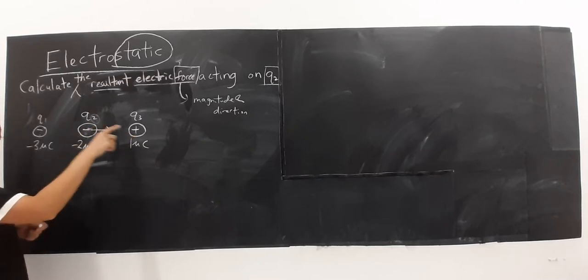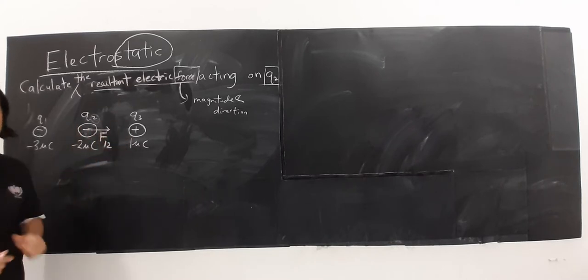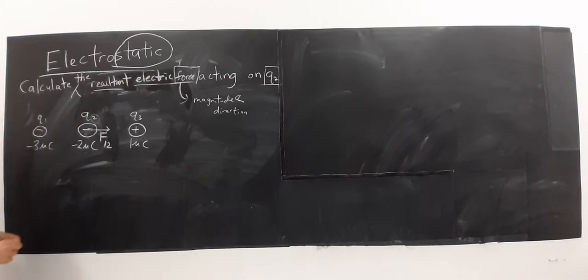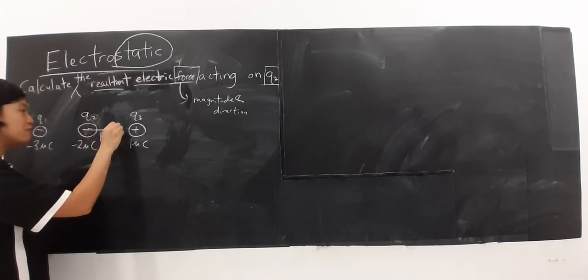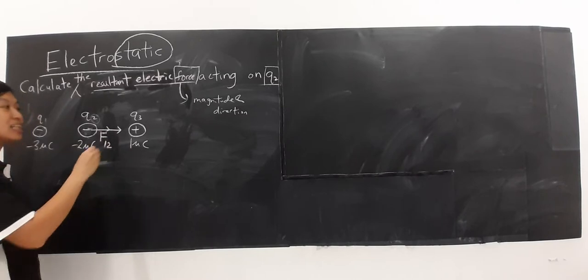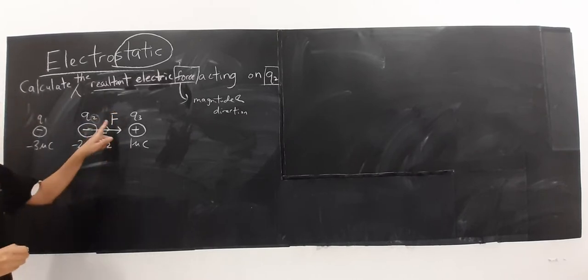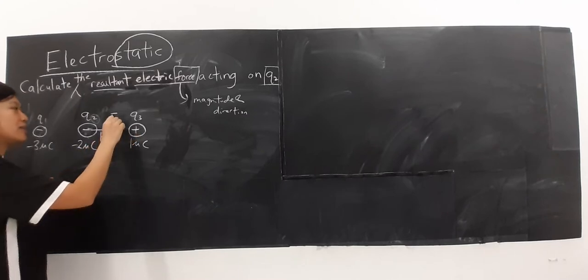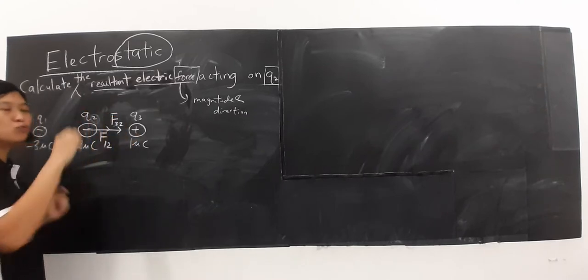Macam mana dengan ni? Negative, positive. Charge yang tak sama, unlike charges, always attracted. So, jadi kalau dia tertarik ke arah ini, maka force ini ke kanan jugalah. Jadi ini adalah force dari charge nombor 3 ke atas charge nombor 2. So we have this.